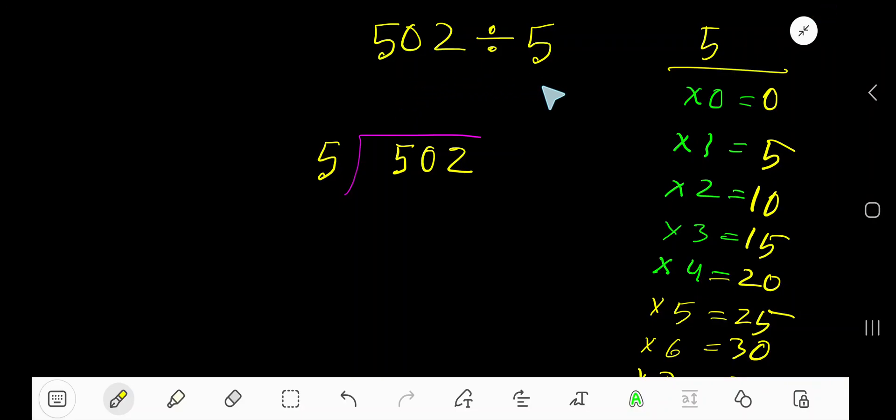502 divided by 5. 5 is a divisor, so we need the multiplication table of 5. 5 times 0 is 0, 5 times 1 is 5, 5 times 2 is 10, 5 times 3 is 15, 5 times 4 is 20. To find the multiplication table of 5 easily, just add 5 with the previous step: 0 plus 5 is 5, 5 plus 5 is 10, 10 plus 5 is 15, 15 plus 5 is 20.